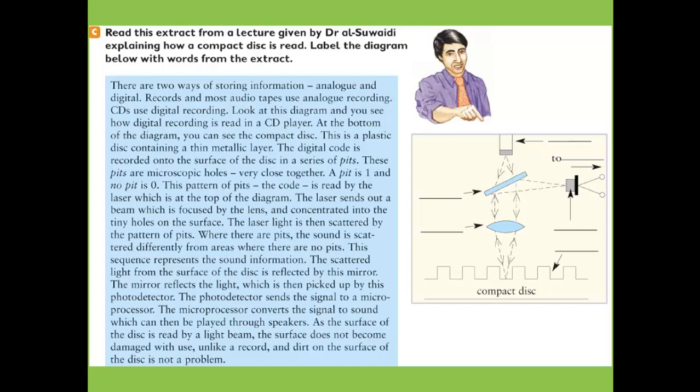At the bottom of the diagram you can see the compact disc. This is a plastic disc containing a thin metal-like layer. The digital code is recorded onto the surface of the disc in a series of bits. These bits are microscopic holes very close together — a pit is one and no pit is zero. This pattern of pits forms the code.